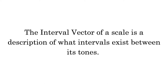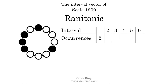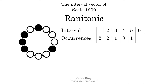The interval vector of a scale is a description of what intervals exist between its tones. There are 2 intervals with the size of 1 semitone. There are 2 intervals with the size of 2 semitones. There is 1 interval with the size of 3 semitones. There are 3 intervals with a size of 4 semitones. There is 1 interval with a size of 5 semitones. There is 1 interval with a size of 6 semitones. Each interval does not appear in this scale a unique number of times, so this is not a deep scale.